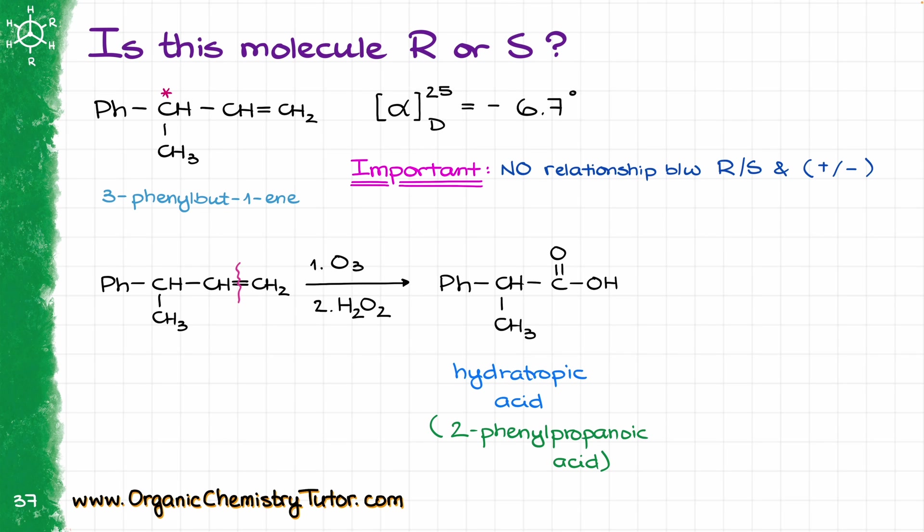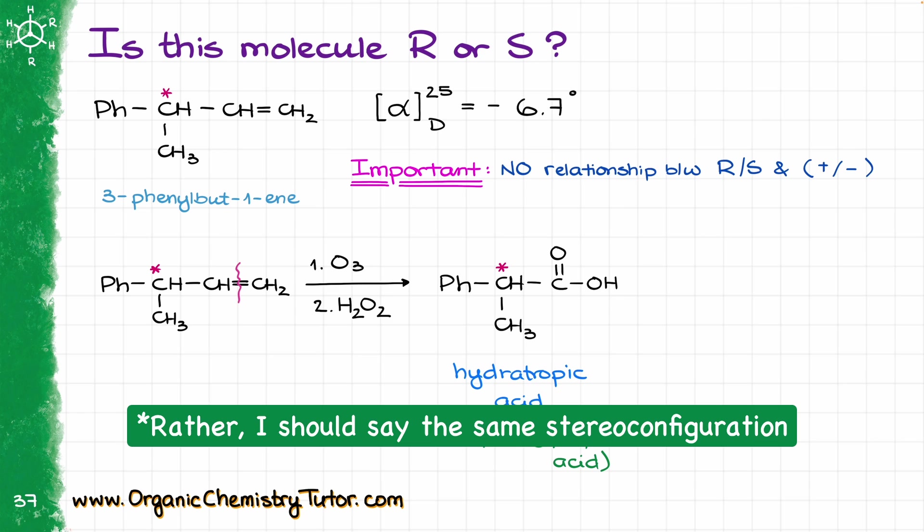Now, during this ozonolysis reaction that we have just done here, we have cleaved our double bond. However, the chiral carbon that we had over here, well, that carbon we did not touch. So the chiral carbon which we have in our product should have the same stereodescriptor as the one that we had from the very beginning.